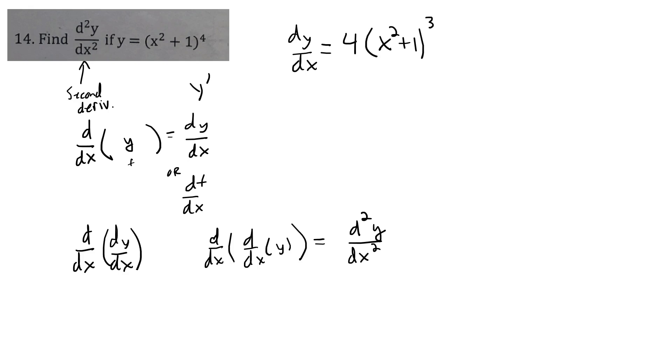That's the outside function. The fact that you have something to the fourth power, bring down that 4, take that something to the third power, and then what you do is you multiply by the derivative of the inside, which is going to be 2x. And so that simplifies to be 8x times x squared plus 1 quantity cubed.